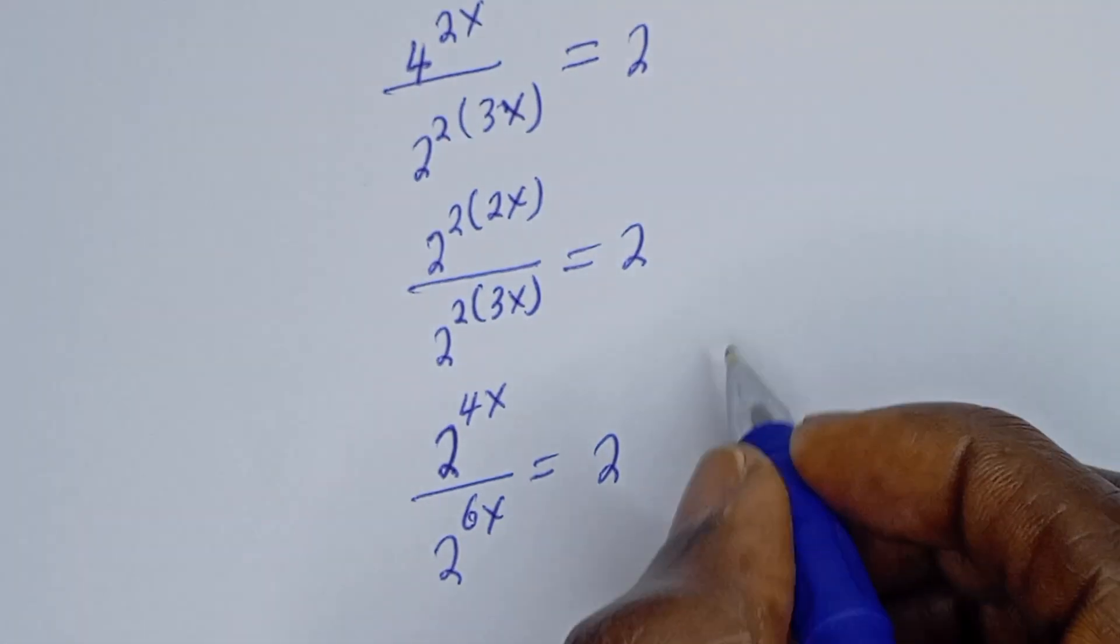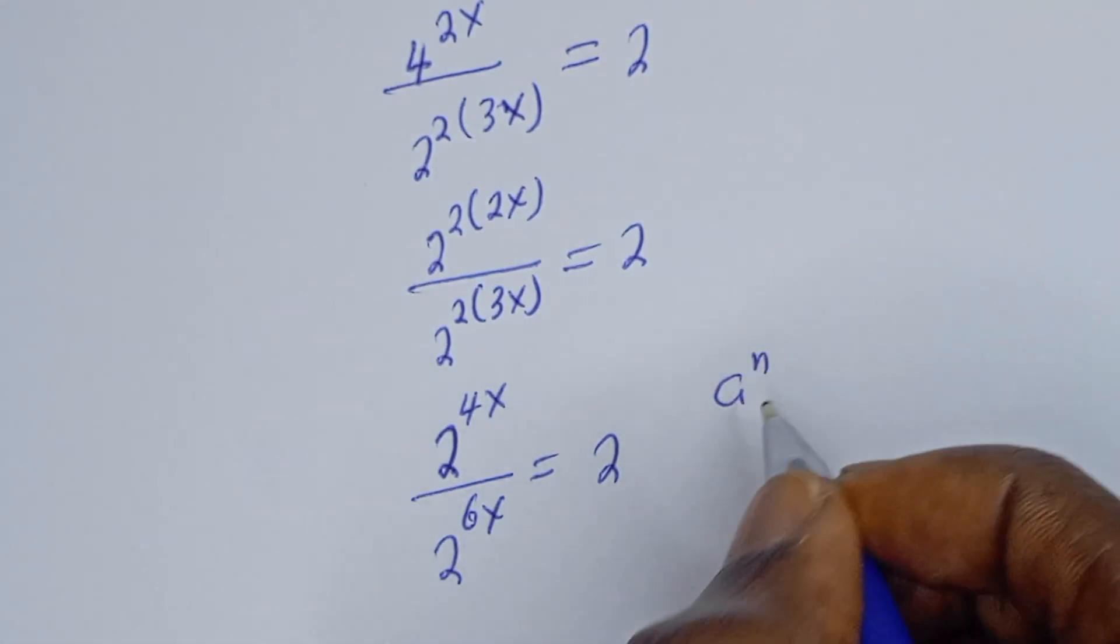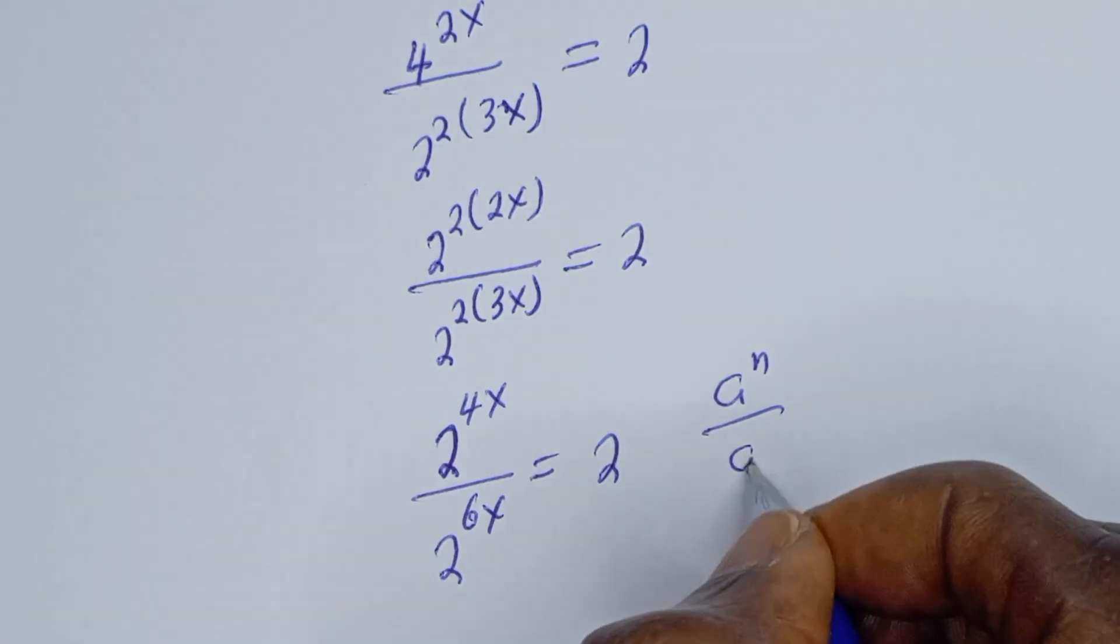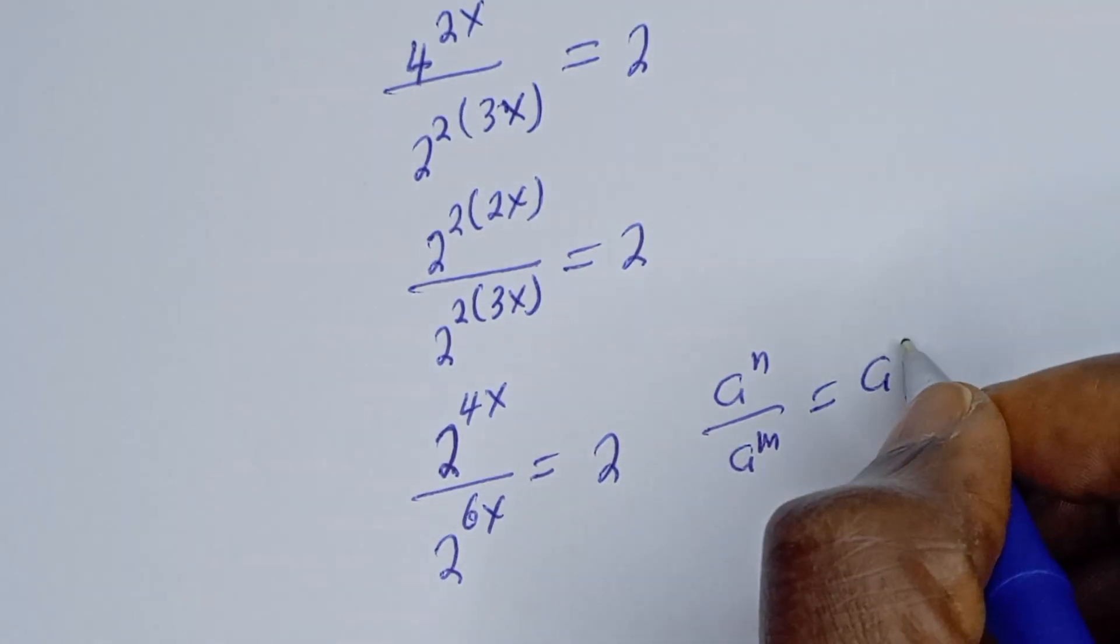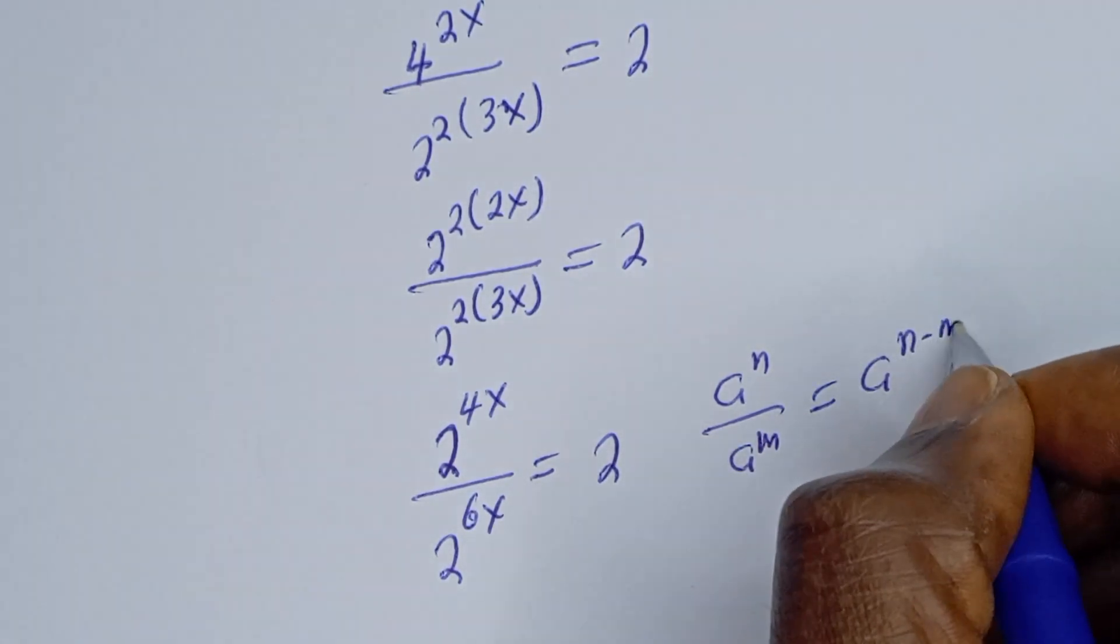Take note of this: if you have a to the power n over a to the power m, this is equal to a to the power n minus m.